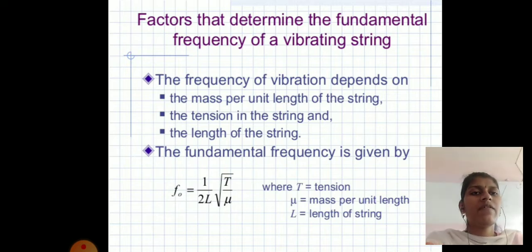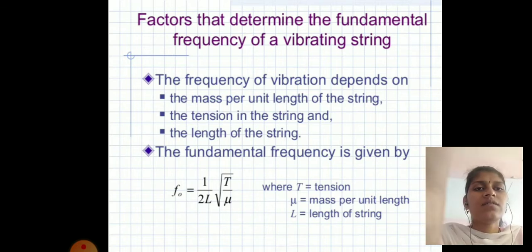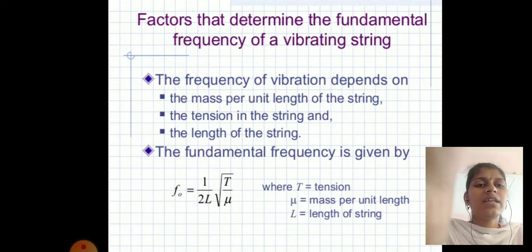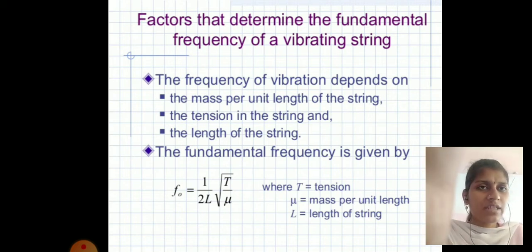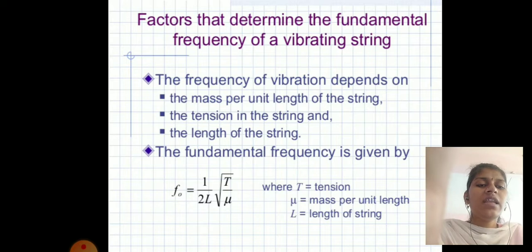Factors that determine the fundamental frequency of a vibrating string: first, the mass per unit length of the string; second, the tension in the string; third, the length of the string. The fundamental frequency is given by f₀ = (1/2L)√(T/μ), where T is tension, μ is mass per unit length, and L is the length of the string.